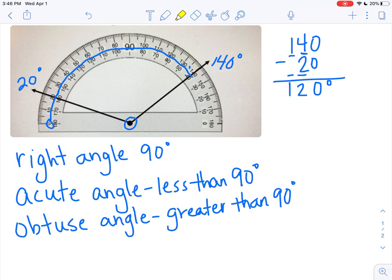So, does that make this angle a right angle, an acute angle, or an obtuse angle? Oh, very good. That makes it an obtuse angle because it is greater than 90 degrees. An obtuse angle is greater than 90 degrees.